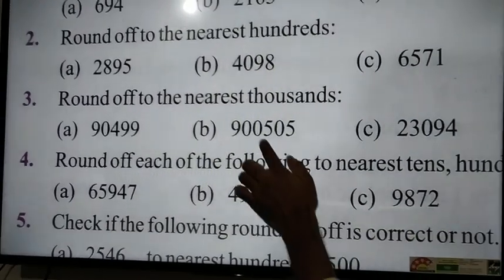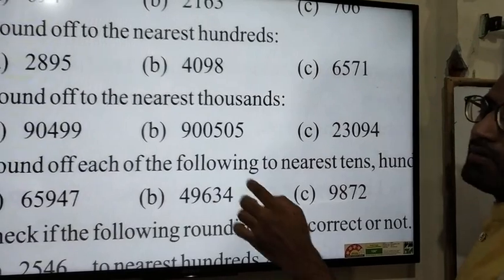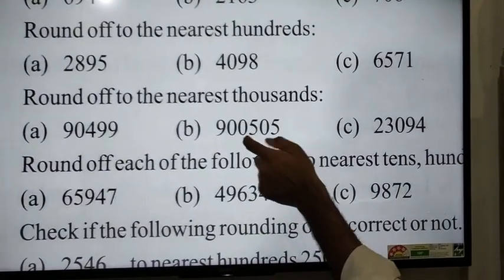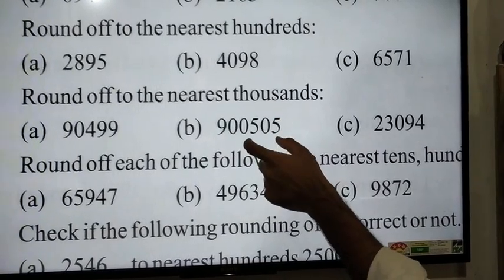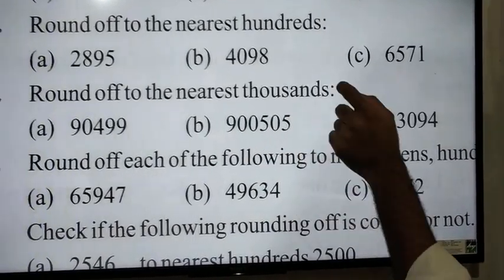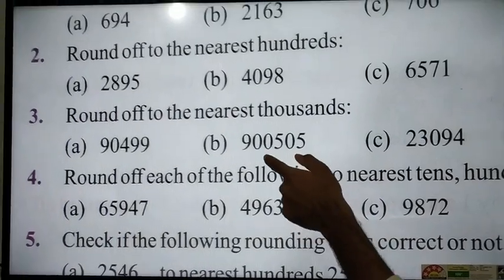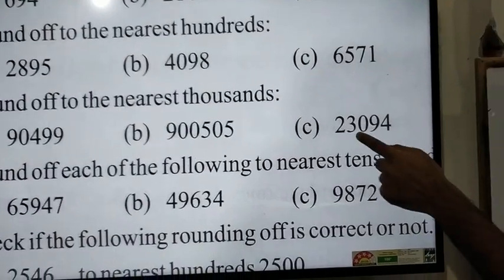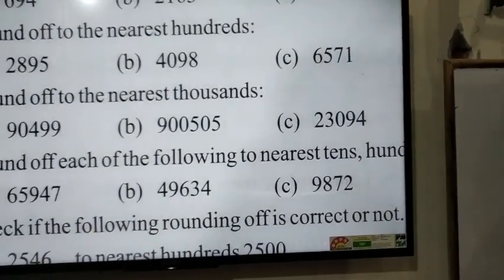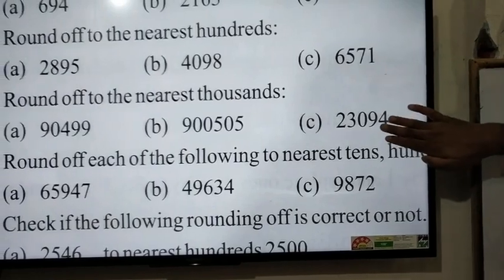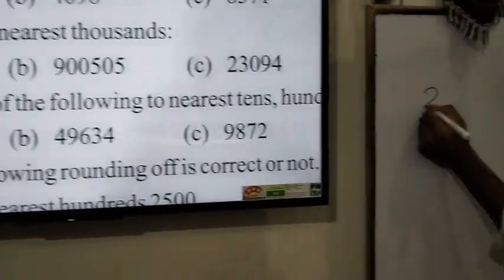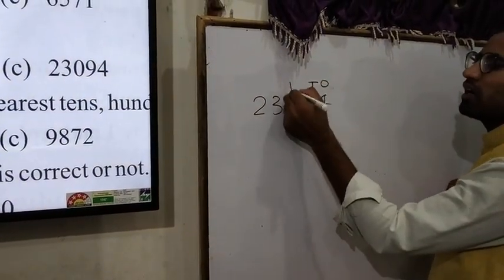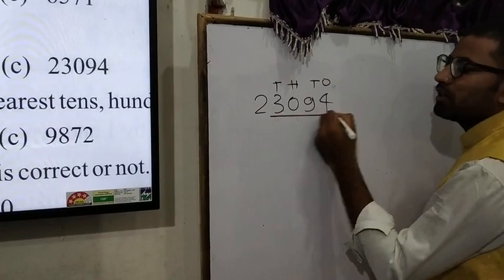Next, 90,505 will round to 91,000. Question number 3: 23,094. This will be 23,000.